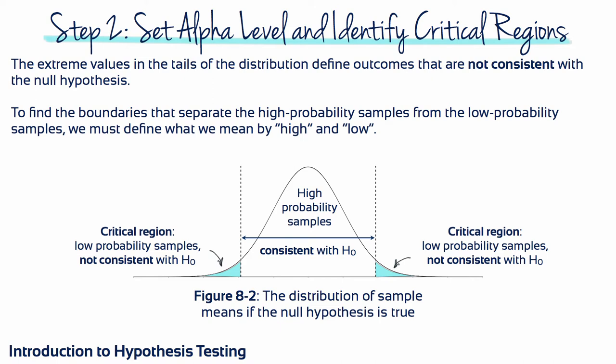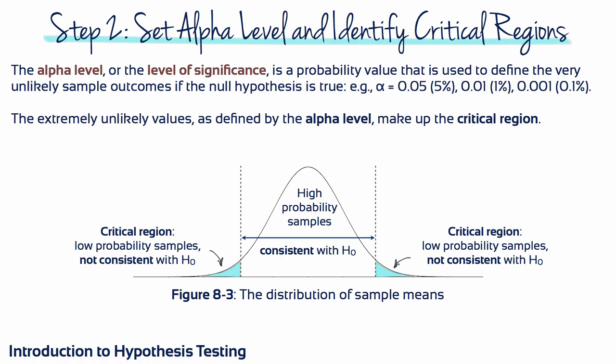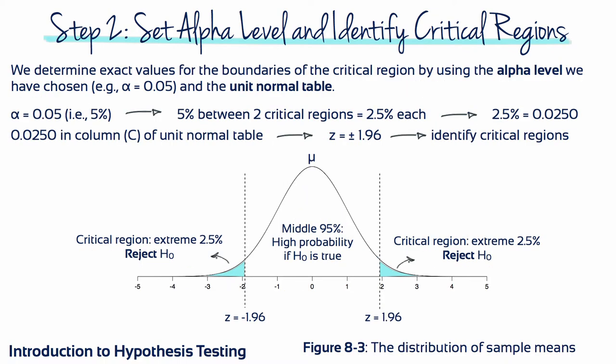The extreme values in the tails of the distribution define outcomes that are not consistent with the null hypothesis. To find the boundaries that separate high probability samples from low probability samples, we must define what we mean by high and low. The alpha level, or the level of significance, is a probability value used to define the very unlikely sample outcomes if the null hypothesis is true. The extremely unlikely values, as defined by the alpha level, make up the critical region. We determine exact values for the boundaries of the critical region by using the alpha level we've chosen, for example 5%, and the unit normal table.